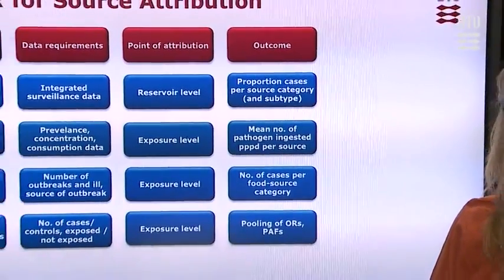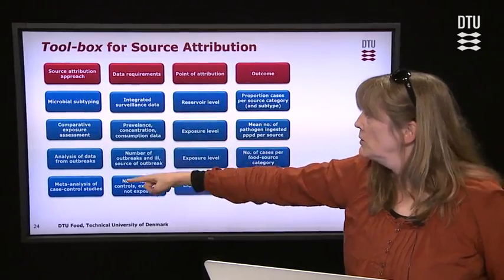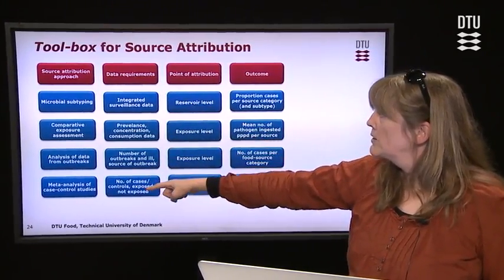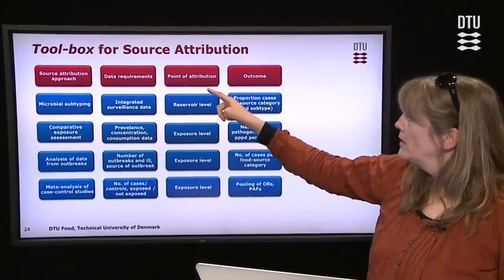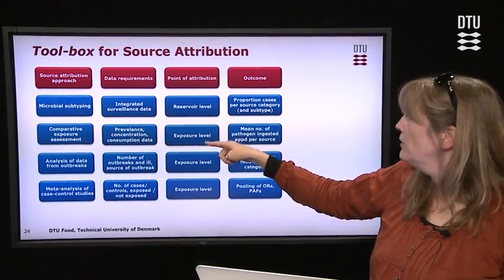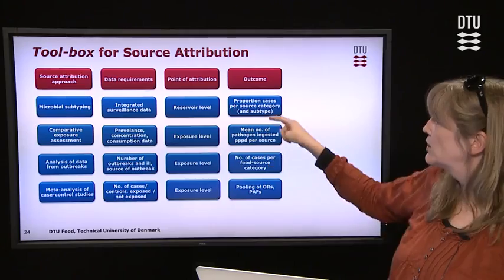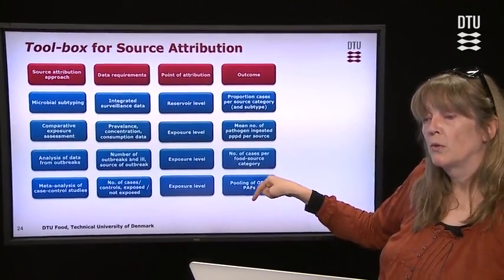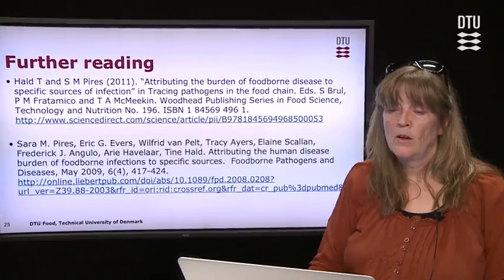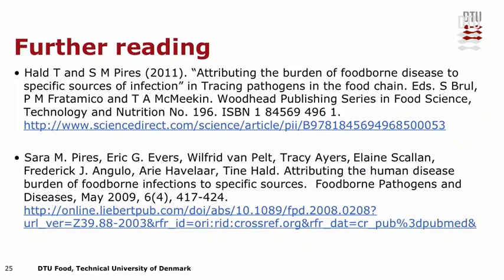On the last slide, a toolbox for source attribution gives an overview of the different approaches, the data requirements for each, where they work, at what point of attribution — reservoir level or exposure level — and what the outcomes are and how they answer the question of which are the most important sources. For further reading, two references are provided; they overlap somewhat but reading both will give a good overview of attribution methods.